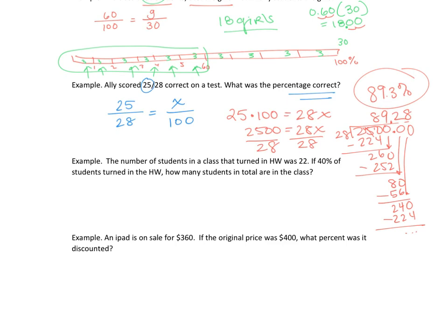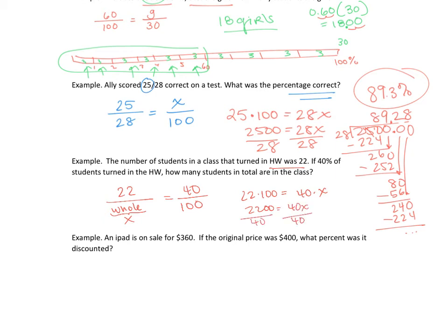The number of students in class that turned in homework was 22 — that's 40% of the students. So 22 out of the whole class is 40%. Calling the whole class x, we say 22 times 100 equals 40 times x — that's 2200 equals 40x. Dividing by 40 gives x equals 55. So there are 55 students in the class.